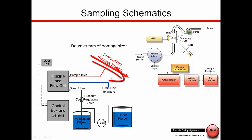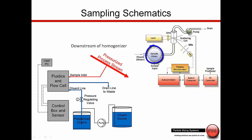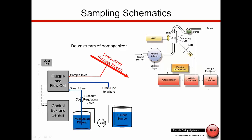Here the sample comes downstream of the homogenizer, into the fluidics, with the sample inlet and diluent inlet. The diluent is pressurized — it's best to have it pressurized so we can get very quick dilution. Sample comes in, diluent comes in, and this is where we do this automatic dilution. After performing this dilution, we bring the sample up to the measurement zone, where it becomes a standard DLS measurement: a light source, a detector, we get the correlation function and do our calculations. We get a result, then clean the cell and get ready for the next measurement.